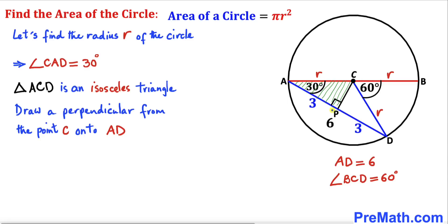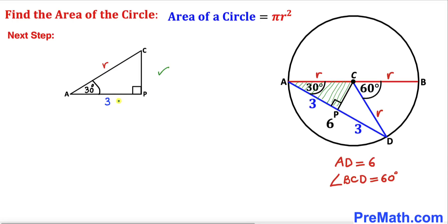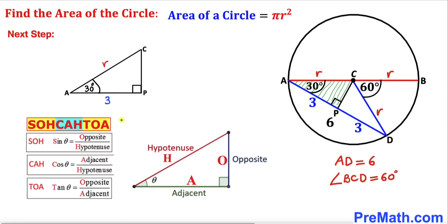Now let's focus on right triangle APC. In this right triangle, side AC is the radius r, side AP is 3 units, and the angle at A is 30 degrees. Recalling SOH-CAH-TOA, cosine theta equals adjacent over hypotenuse. Here AP is the adjacent side and AC is the hypotenuse, so cosine of 30 degrees equals 3 divided by r.